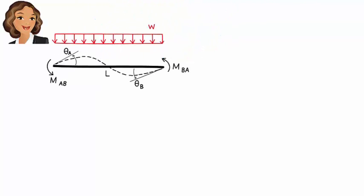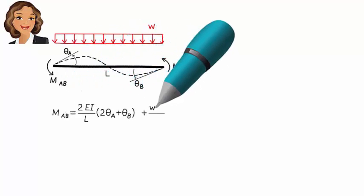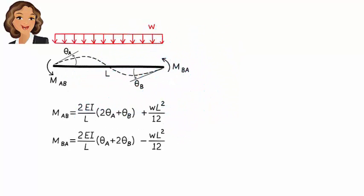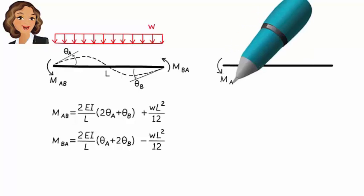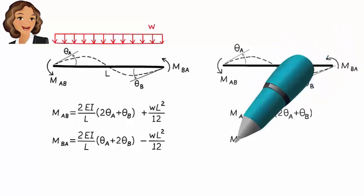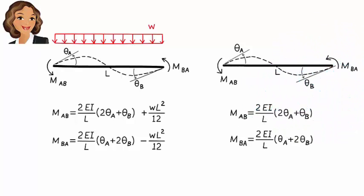So, for a beam segment under a uniformly distributed load, the slope-deflection equations are derived. Let's compare these equations with the ones we got for a load-free beam segment. Here are the two sets of equations side by side. The difference between the two sets can be viewed as the effect of the applied load on the slope-deflection equations.